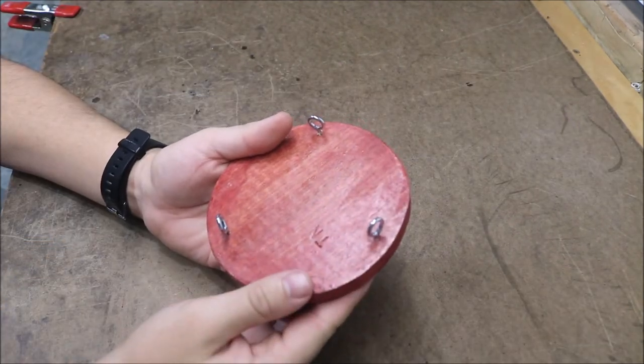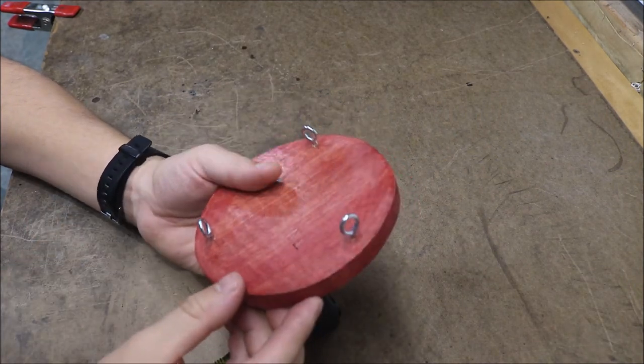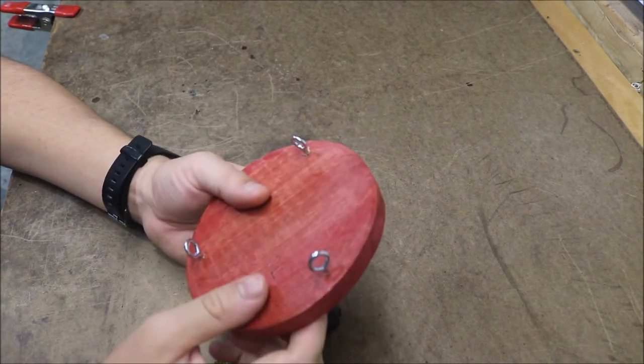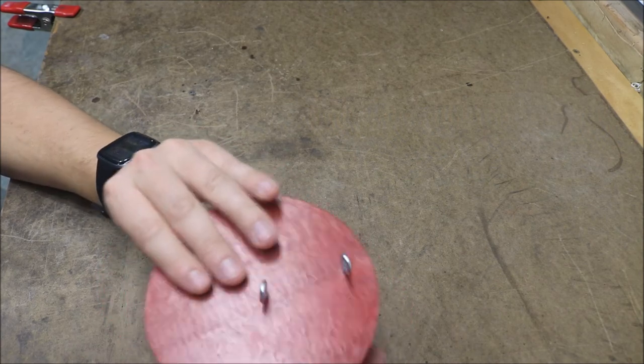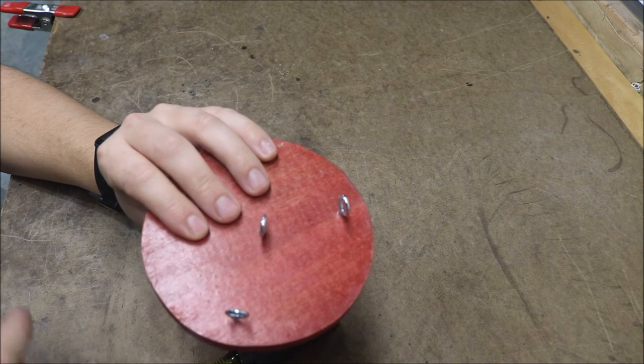Once you get your eyelets in or your screw eyes, you should have three at the top around the outside and try to have them so they're facing the outside like this. And then there should be a total of four on the bottom: there's one under my hand, one here, one here, and one here.